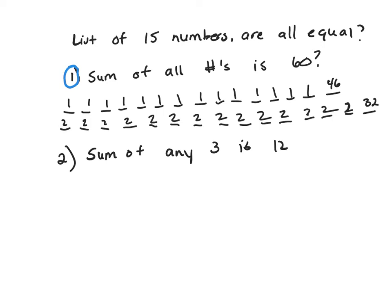Clue 2 is gonna work though, because the sum of any 3 is 12. 12 divided by 3 is going to be 4. All the numbers are going to have to be 4, otherwise you could pick a random set of three numbers and their sum would not be 12. So this is the only way for that to work - if all the numbers are 4. So the answer would be B.